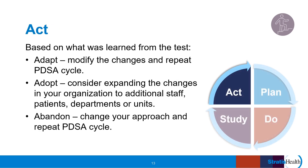The ACT stage involves the team deciding to adapt, adopt, or abandon the tested change. The team might modify any aspects of the change and repeat the PDSA cycle. They might adopt the change and consider broadening the scope of the test with more people, departments, or additional shifts. Or the team may choose to abandon the tested change and plan a new test of change that may be more beneficial in working towards the goal.